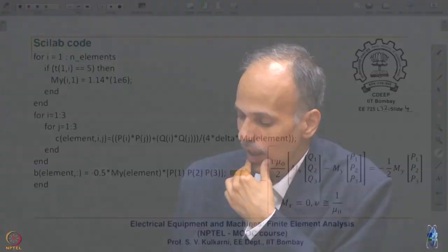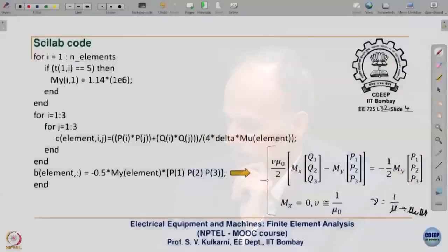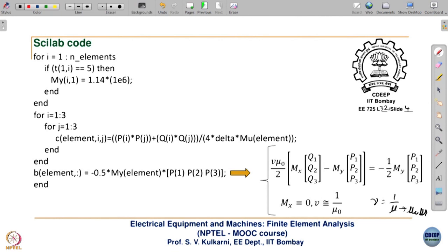M_X is zero, and I am assuming mu_R for the permanent magnet equal to 1, meaning chi_m is assumed equal to 0. That means mu is 1/(mu_0 · mu_r) = 1/mu_0, and this gets cancelled, leaving only minus 0.5 times the element area term. That is the only change; the rest of the code remains the same. Thank you.